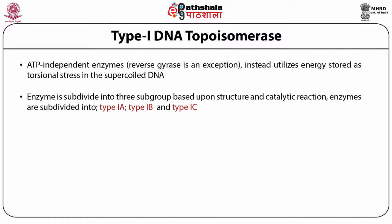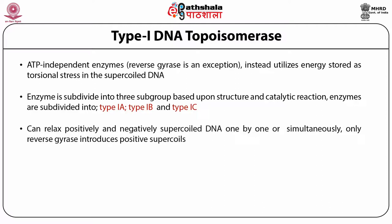Type 1 enzymes can be further subdivided into type 1A, type 1B, and type 1C. These enzymes can relax both positive and negative supercoiling; only reverse gyrase is the one which can induce a positive supercoil. These enzymes can do this job either one at a time or simultaneously — one enzyme can do both jobs at the same time.